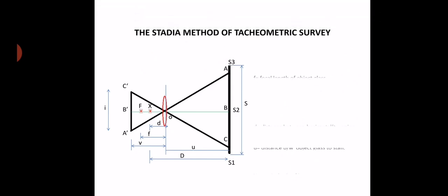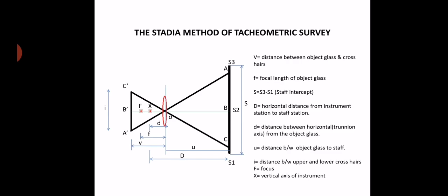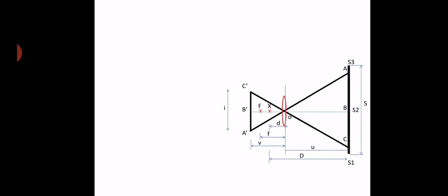To summarize the terms: V is the distance between the object glass and the crosshairs; F is the focal length of the object glass; S is the staff intercept, which is the upper crosshair reading minus the lower crosshair reading (S3 minus S1); D is the horizontal distance from the instrument station to the staff station; small d is the horizontal distance from the trunnion axis to the object glass; U is the distance between the object glass and the staff; i is the distance between the two crosshairs (upper and lower); and the vertical axis of the instrument is also called the instrument center.